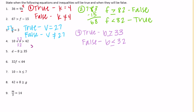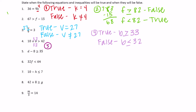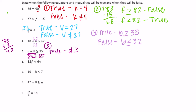Number five: d minus 8 is greater than or equal to 35. Let's make them equal — what minus 8 equals 35? That's 35 plus 8, which is 43. So if d is 43, then 43 minus 8 is 35, and 35 is greater than or equal to 35, which is true because they're equal. So d needs to be greater than or equal to 43 for it to be true, and less than 43 for it to be false.